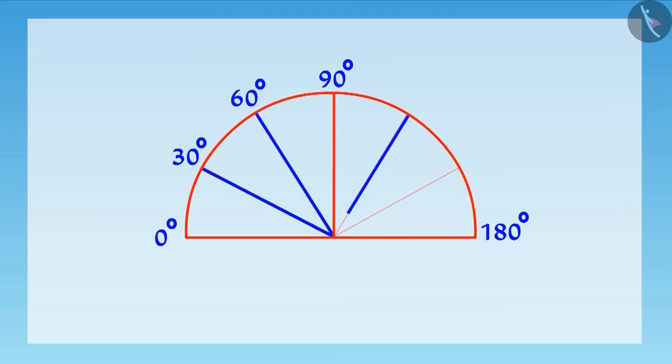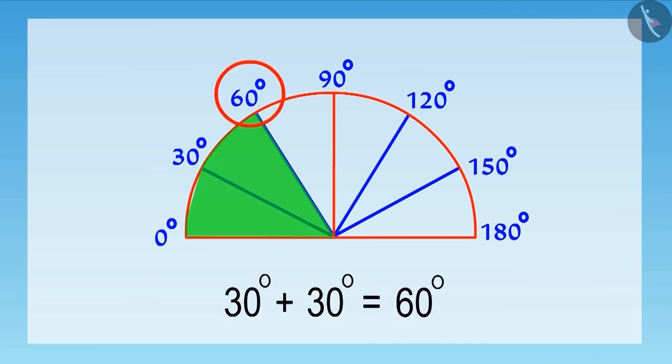So, there will be a total of six parts of the semicircle. Here we divide 90 degrees into three equal parts and hence the measurement of each part will be 30 degrees. And if we count from zero, then this first angle will be 30 degrees, second 60 degrees.